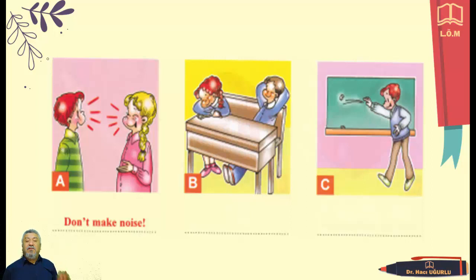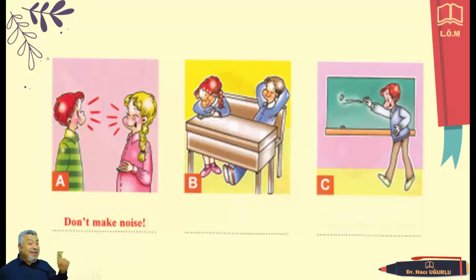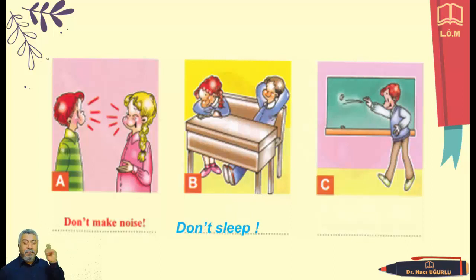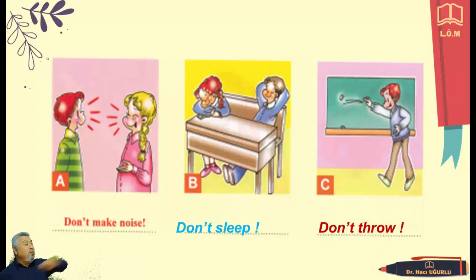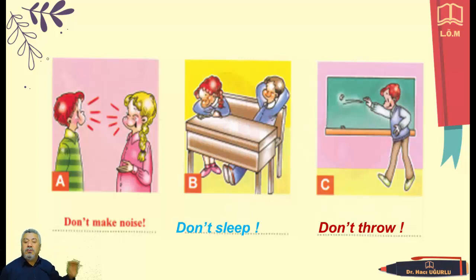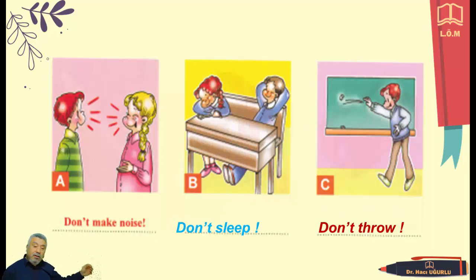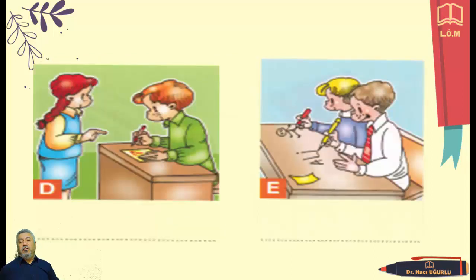And now, negative imperatives. Don't make noise. Second: don't sleep. And: don't throw. Now repeat after me: don't make noise, don't sleep, don't throw.